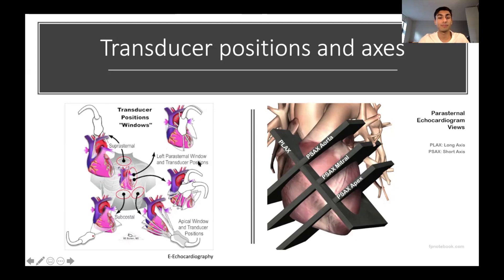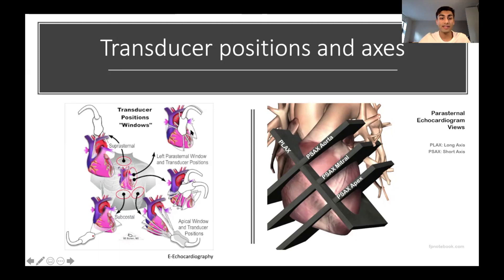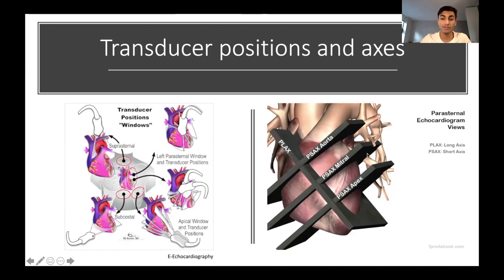Today I'm really going to be focusing on the parasternal views. There are two different kinds of axes with the parasternal view. We have the parasternal long axis, or PLAX, and if you turn the probe about 90 degrees, you get what's called the parasternal short axis. You can place the probe at different levels of the heart to visualize the different valves — the aortic level, the mitral level, and the apex.